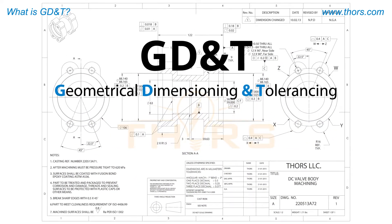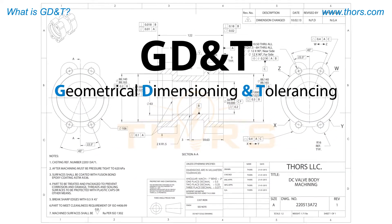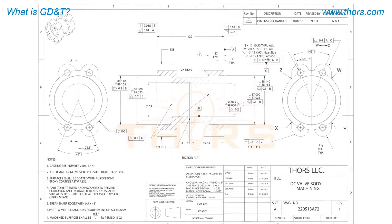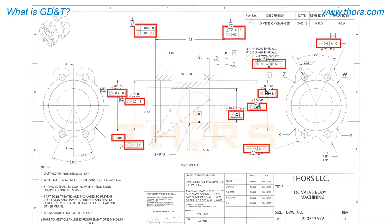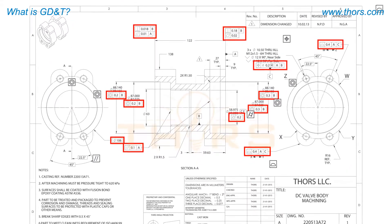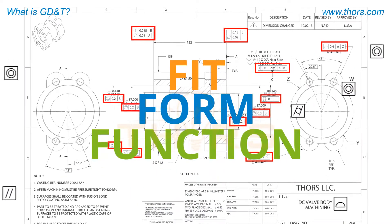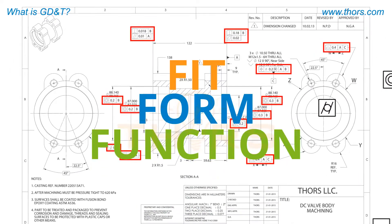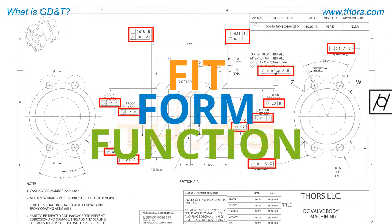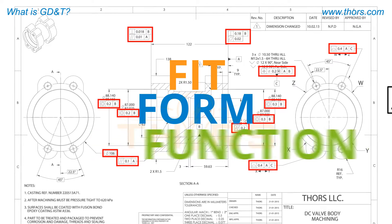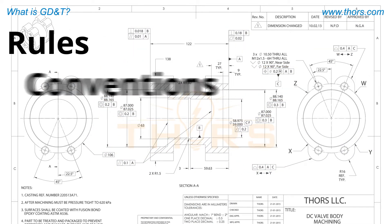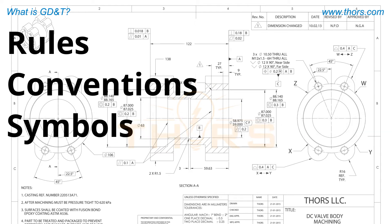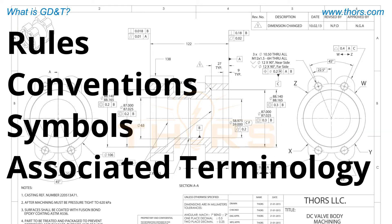Geometric dimensioning and tolerancing is a language of symbols used on engineering drawings to convey design intent so that the product meets the necessary fit, form, and function requirements and helps make the product easy to manufacture. The GD&T language consists of a set of rules, conventions, symbols, and their associated terminology.